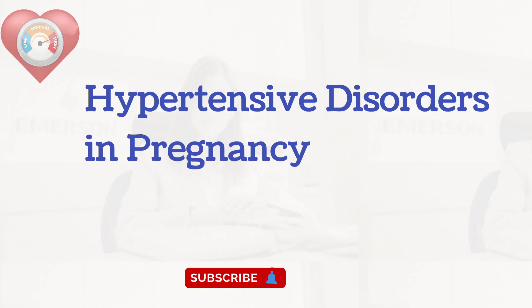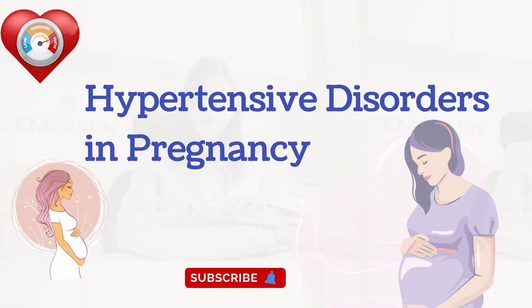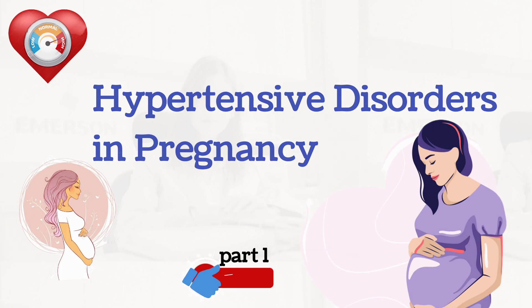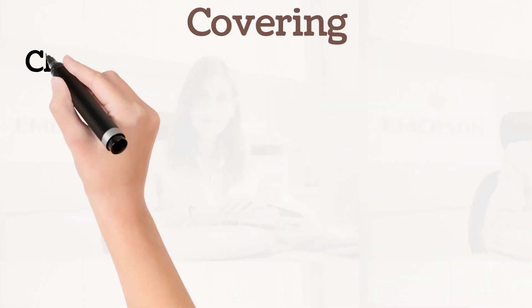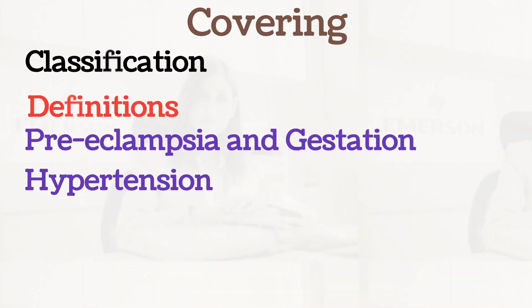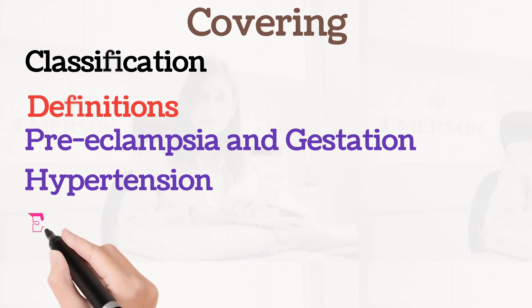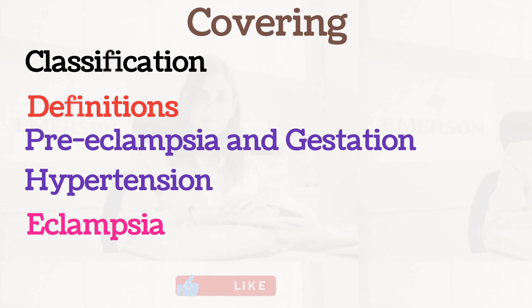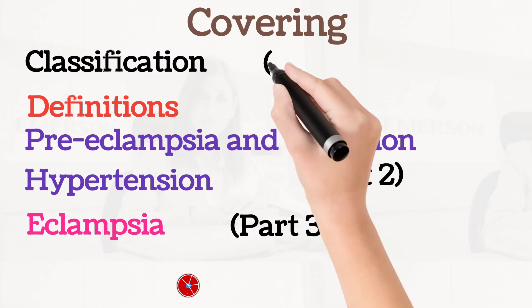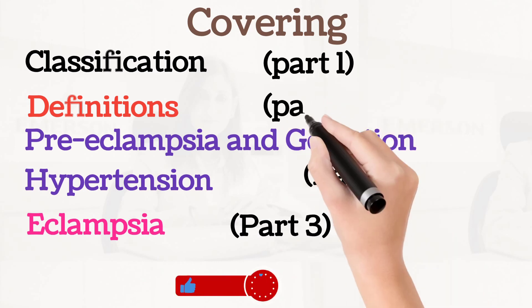In this series we are going to cover hypertensive disorders in pregnancy. If you haven't subscribed, you can subscribe and like this video. This video is going to be covered in three parts — part one, two, and three. This is part one. The contents covered in this part include classification and definitions, pre-eclampsia, gestational hypertension, and eclampsia. Eclampsia will be covered in parts two and three.